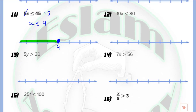Next, 10x less than 80. 10x means 10 multiplied by x, so we use the inverse operation, which is division. I will divide by 10. So x is now less than 80 divided by 10, which equals 8. We write 8. Less than means an open circle, and we shade the part which lies at the left.